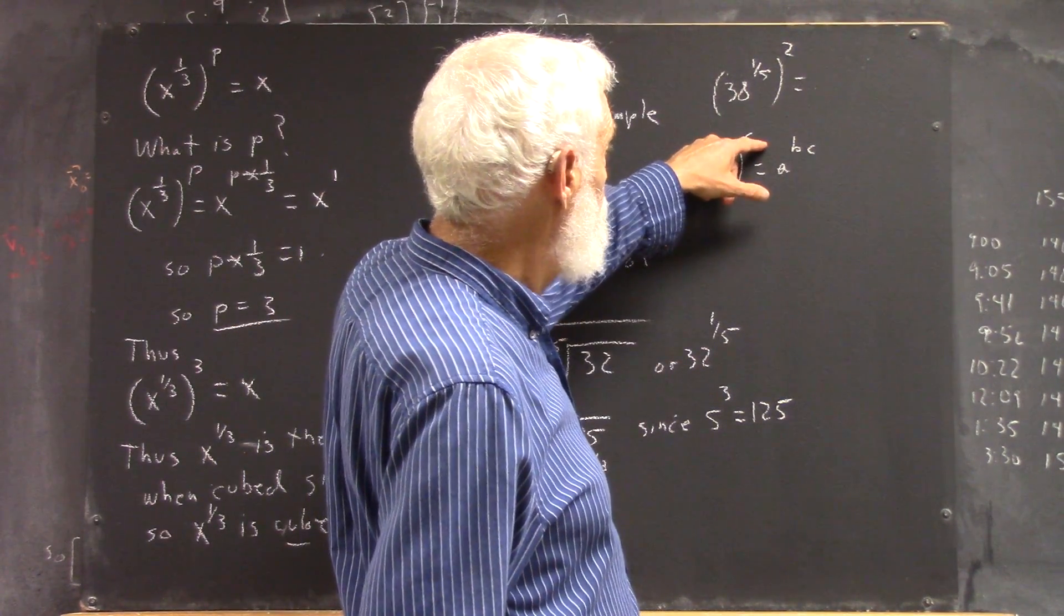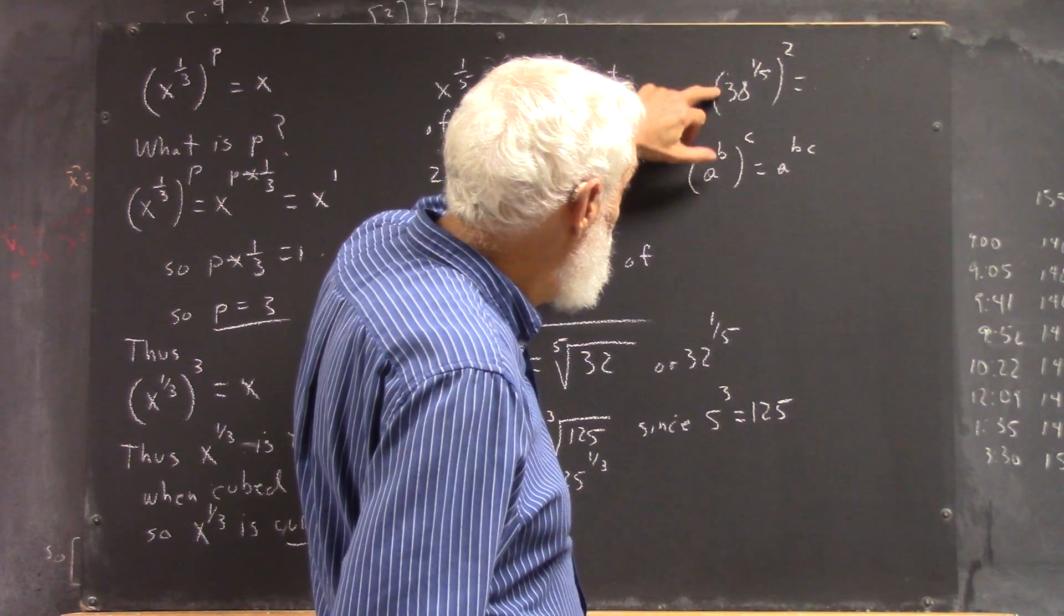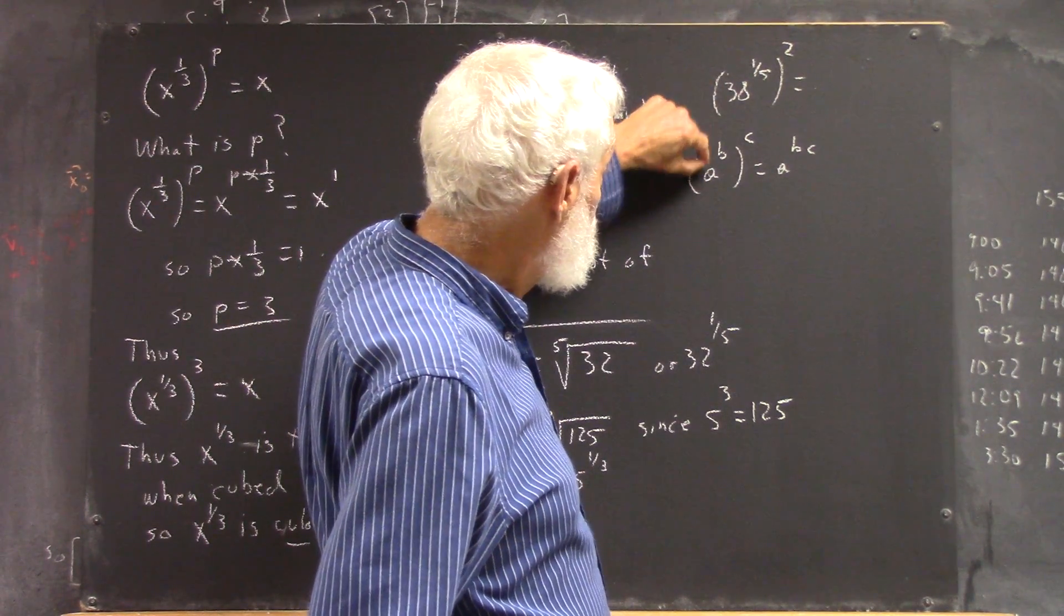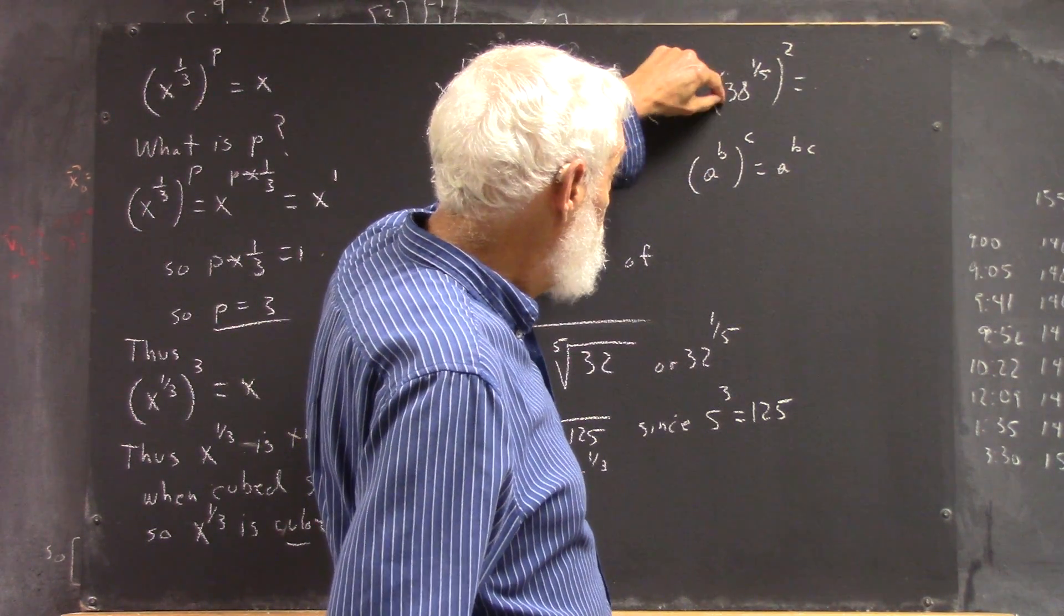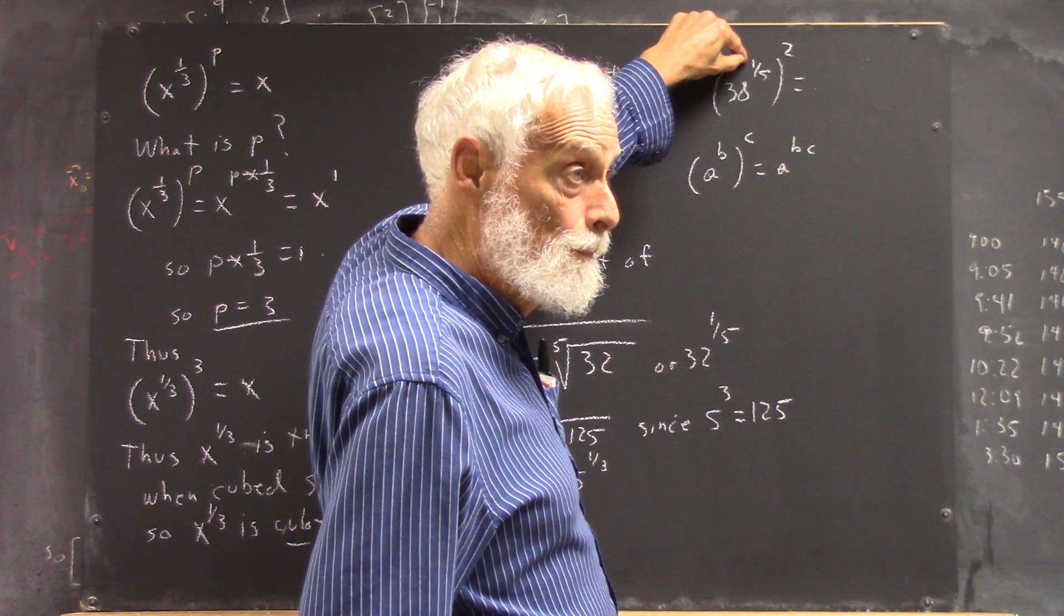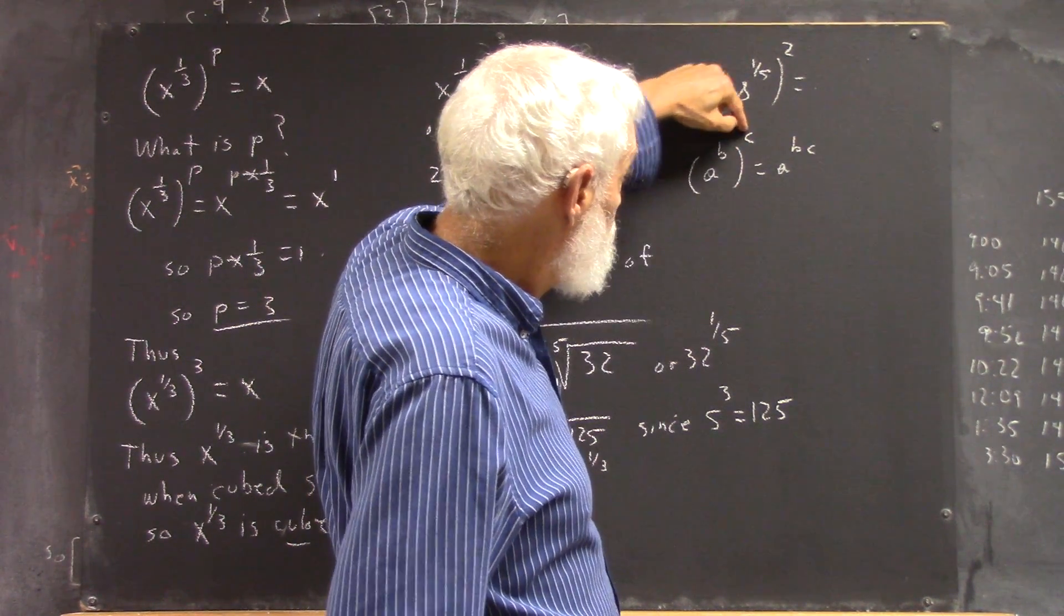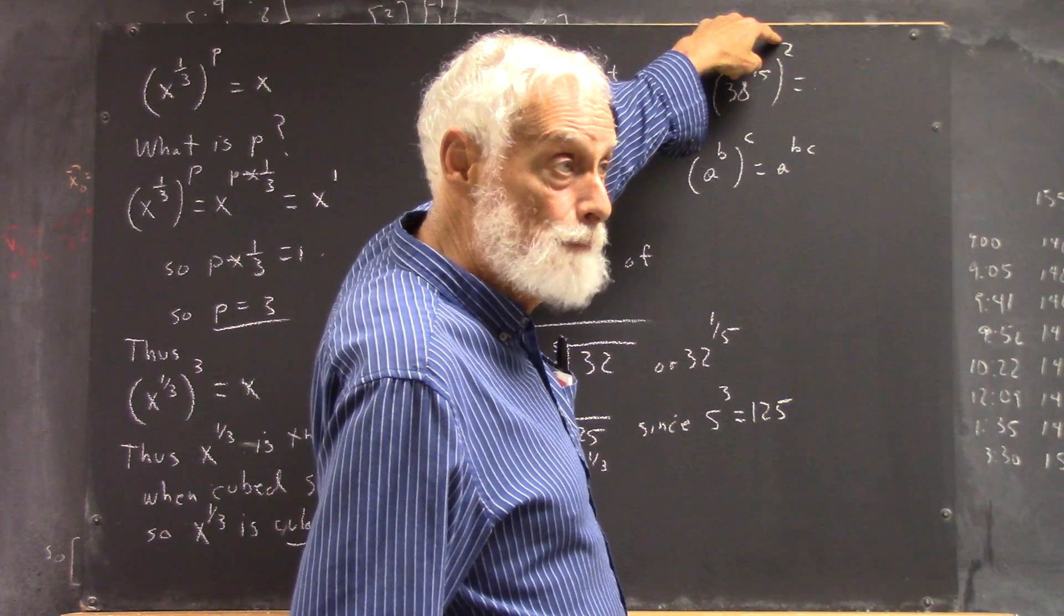So using this law, we see that A is 38, B is the power to which A is raised - that's the one-fifth power. And all that is raised to the C power, which is power 2, right?